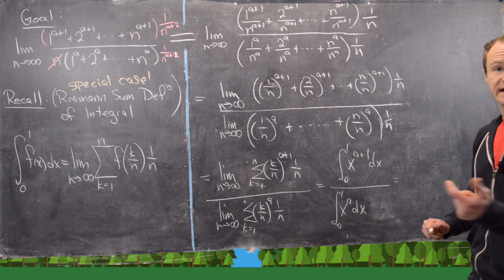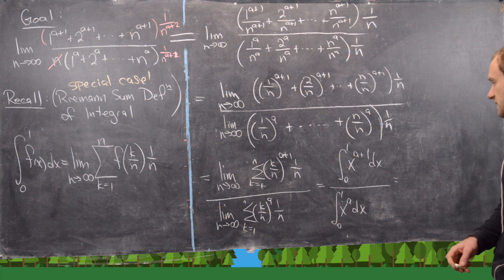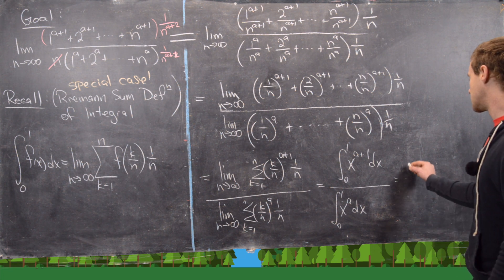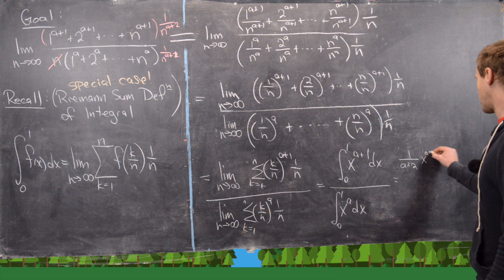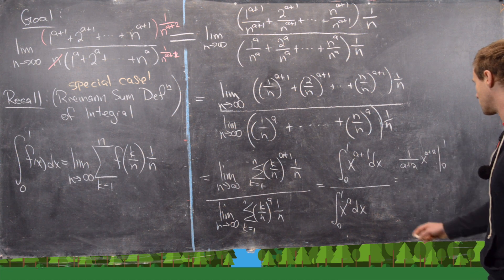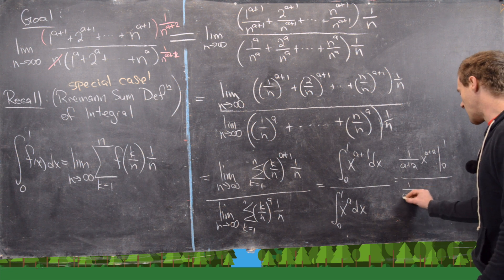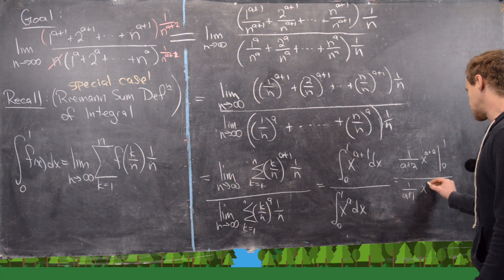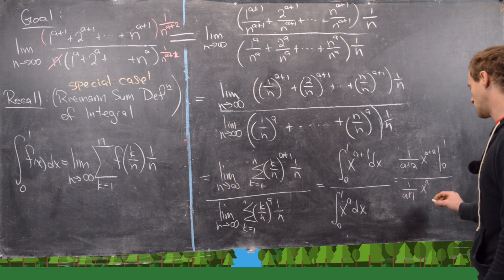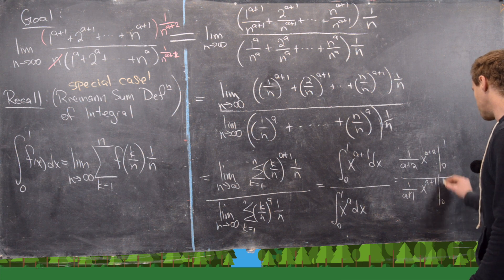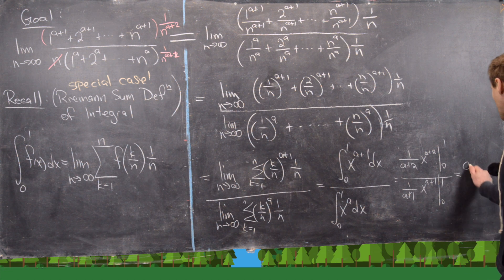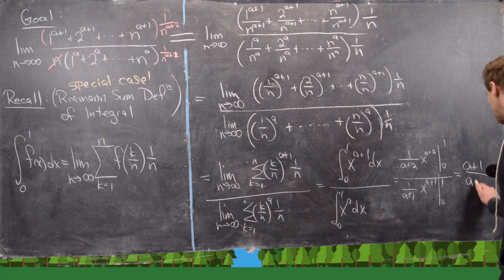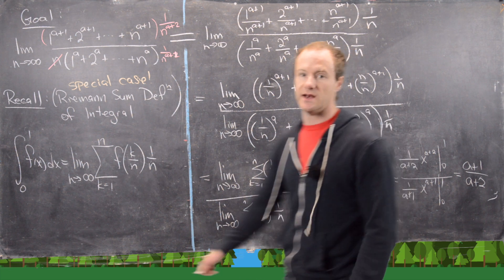We can calculate both of these using the Fundamental Theorem of Calculus. That gives us [1/(a+2)] x^(a+2) evaluated from 0 to 1 in the numerator, and [1/(a+1)] x^(a+1) evaluated from 0 to 1 in the denominator. Plugging in, you get (a+1)/(a+2) as the final answer.